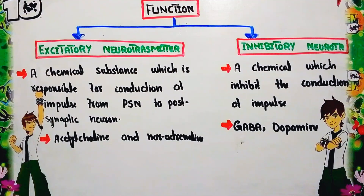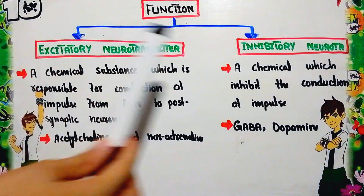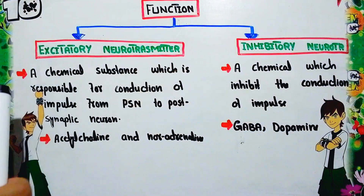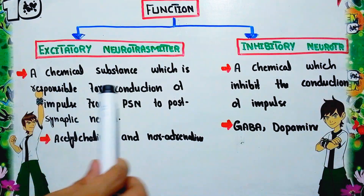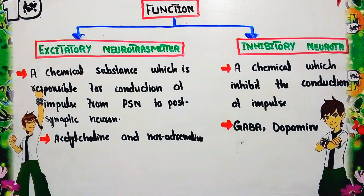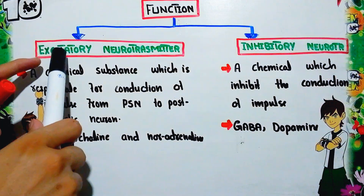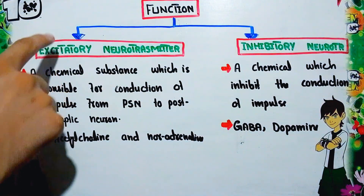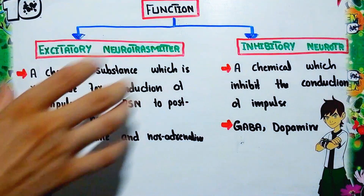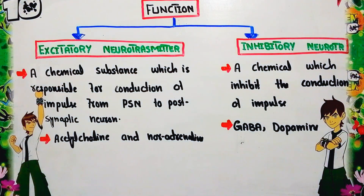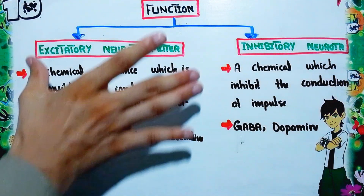Based on function, neurotransmitters are classified into two categories. Excitatory neurotransmitters are chemical substances responsible for the conduction of impulse from the presynaptic neuron to the postsynaptic neuron through the synapse. They carry the message from presynaptic to postsynaptic neuron. Examples include acetylcholine and noradrenaline.